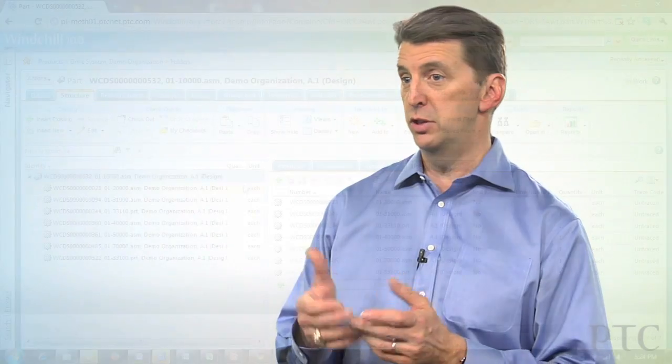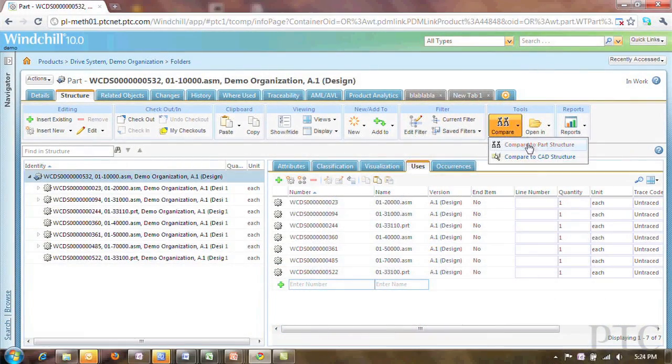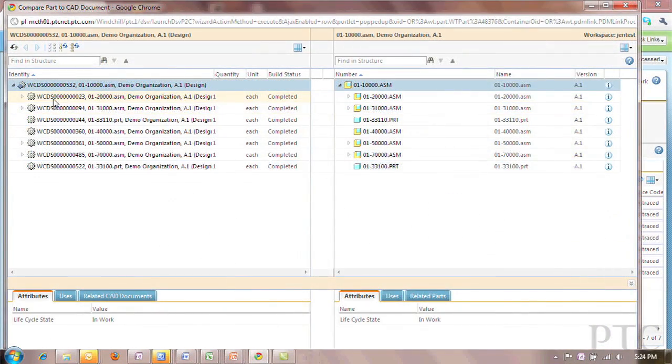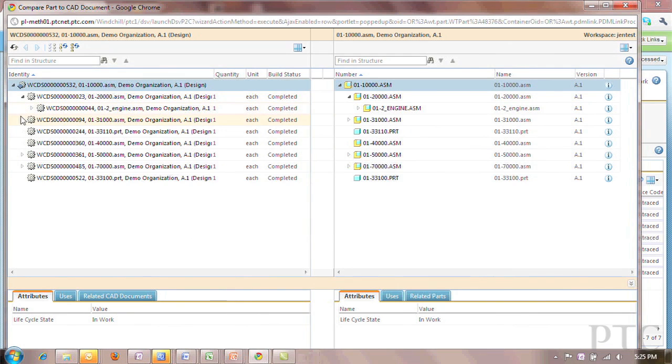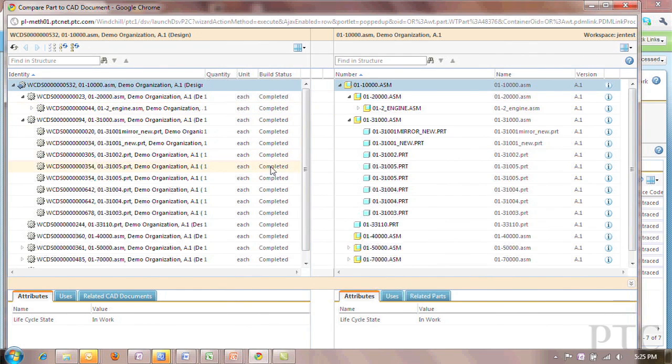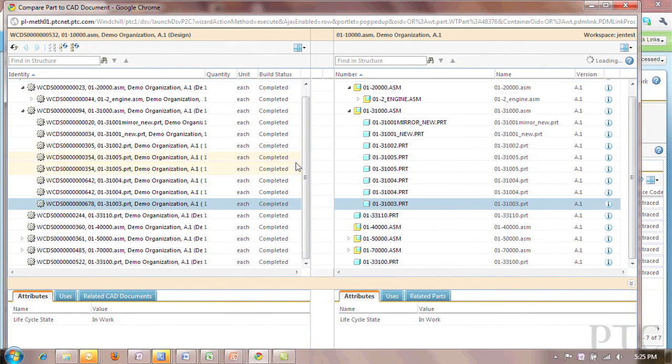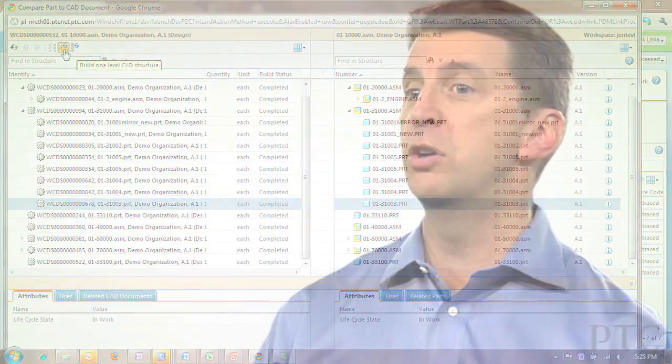Secondly, we focused on several process improvements to help core engineering activities. In the area of detailed design, we're introducing new top-down capabilities to link part and CAD documents to help you better plan your next product, and some remarkable new design and context features to enhance user efficiency in large assembly design.